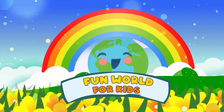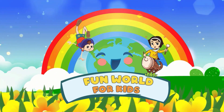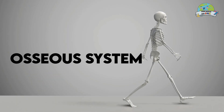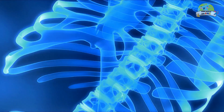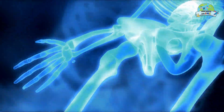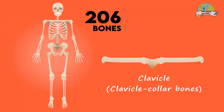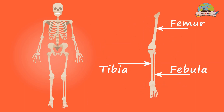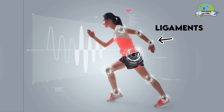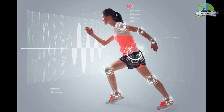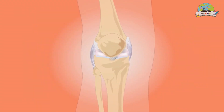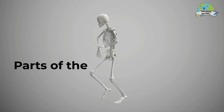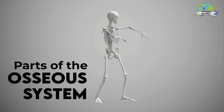Welcome to the fun world for kids! The osseous system is the complex and complete structure of the human skeleton, made up of 206 bones, as well as the cartilage, ligaments and tendons that connect the bones with the muscles and to other bones. Let's find out more about the parts of the osseous system.